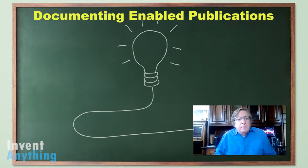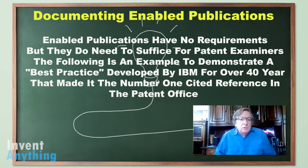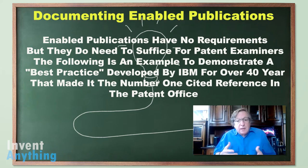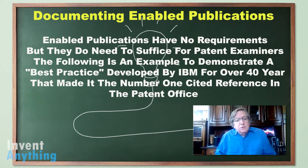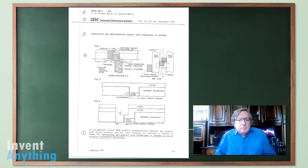Enabled Publications focus specifically on novelty, and they show how things work. So let's talk about developing and documenting an Enabled Publication. There is no requirement of authorship. There is a best practice process to follow, which IBM developed over 40 years through thousands of Enabled Publications that I got trained on. I chose an example from my library — a publication in the open art from 1991 — and we'll actually review it right here.